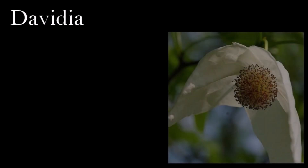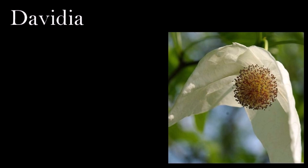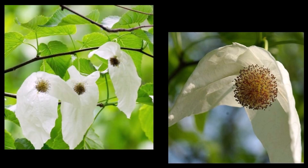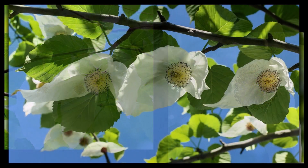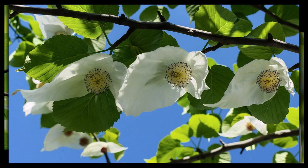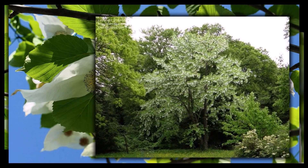Fossil leaves similar to those of living Davidia show that it was prominent in the early Paleogene vegetation of western North America, and suggests that the family had its origins in the Cretaceous. Fossil fruits matured from flower heads that appear to have been borne between two large bracts, as in the living genus. Davidia spread to eastern Russia and China during the Paleogene and Neogene, and narrowly survived extinction during the Quaternary ice ages. There is only one living species in this genus.